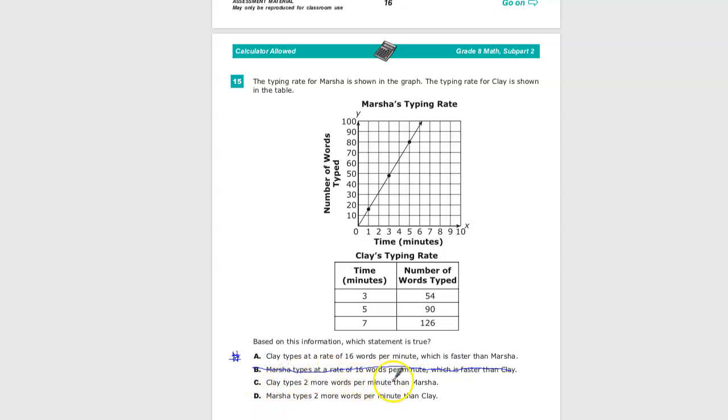Clay types two words per minute more than Marsha. It's possible. And Marsha types two more words per minute than Clay. Well, if she types more, that would make no sense. So now we're down to Clay types at a rate of 16 per minute and Clay types two more words per minute than Marsha.